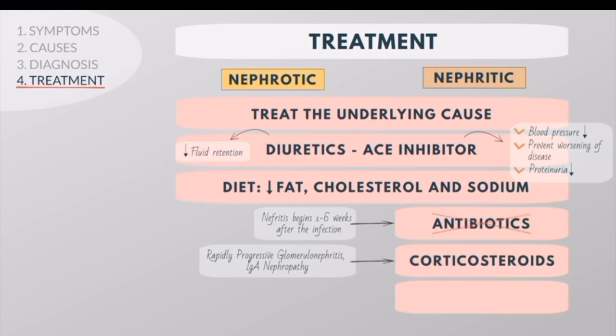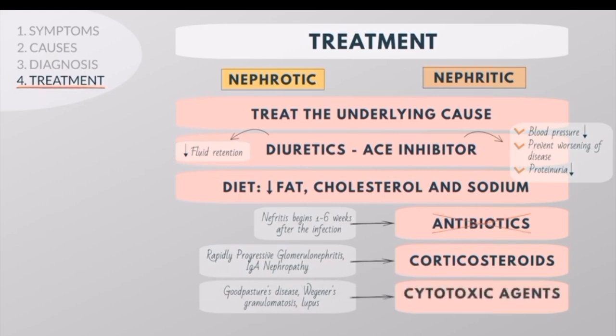Corticosteroids are also used for Goodpasture's disease, Wegener's granulomatosis, and lupus nephritis. Cytotoxic agents such as cyclophosphamide and azathioprine may also be used in these conditions.